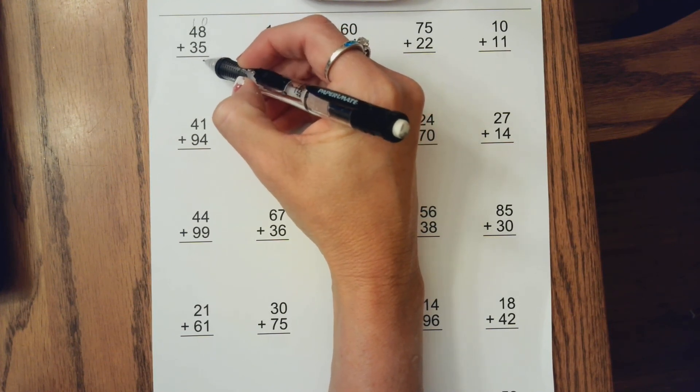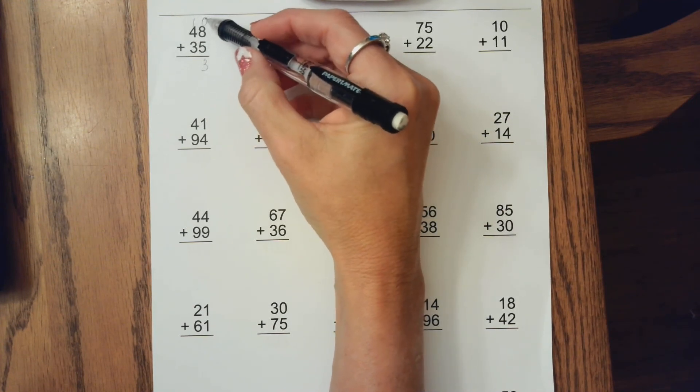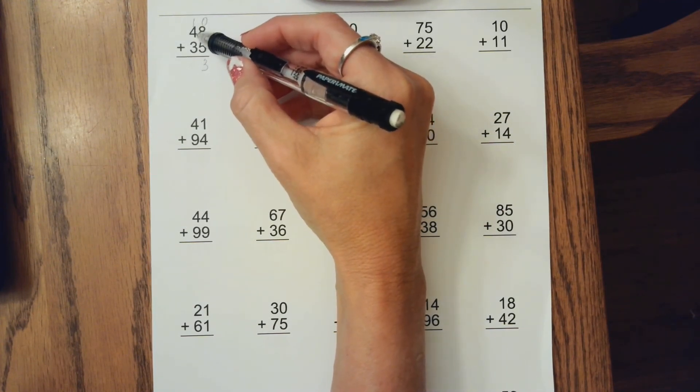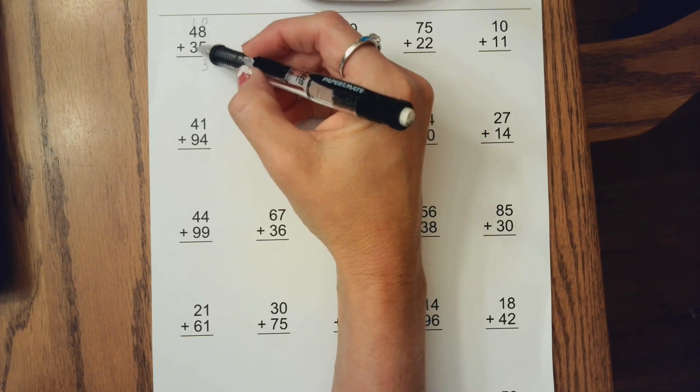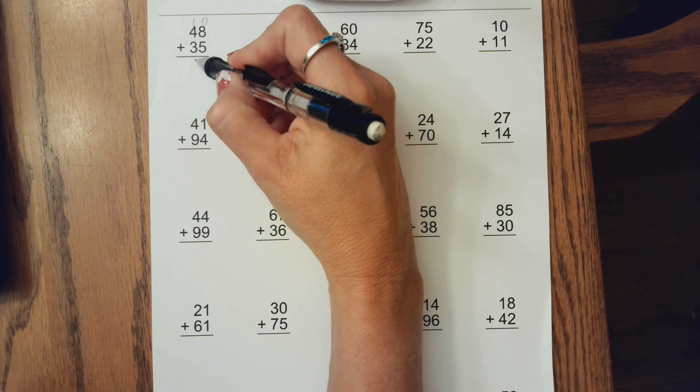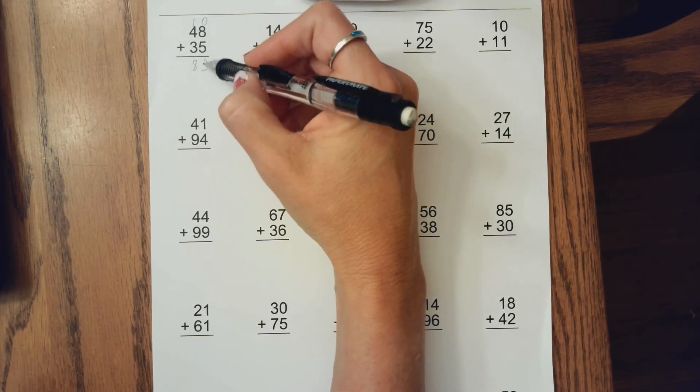So we would add that there because we made a new group of 10. So then we have 4 tens, 5, 6, 7, 8 tens. So 8 tens and the 3 we had is 83.